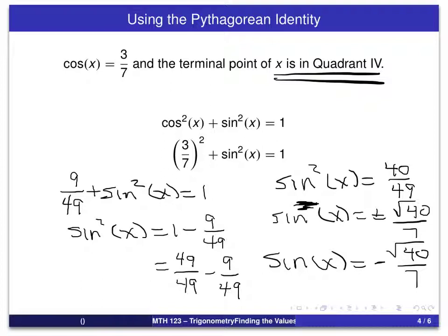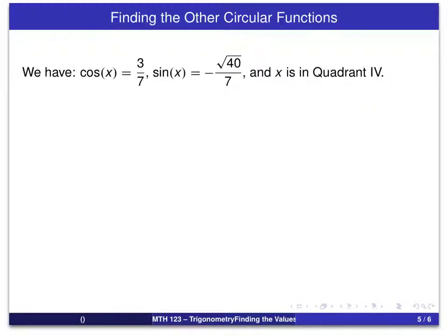We have both values for sine and cosine. We can now get the other four circular functions. And that's what we will do here. In particular, we can use a reciprocal definition.